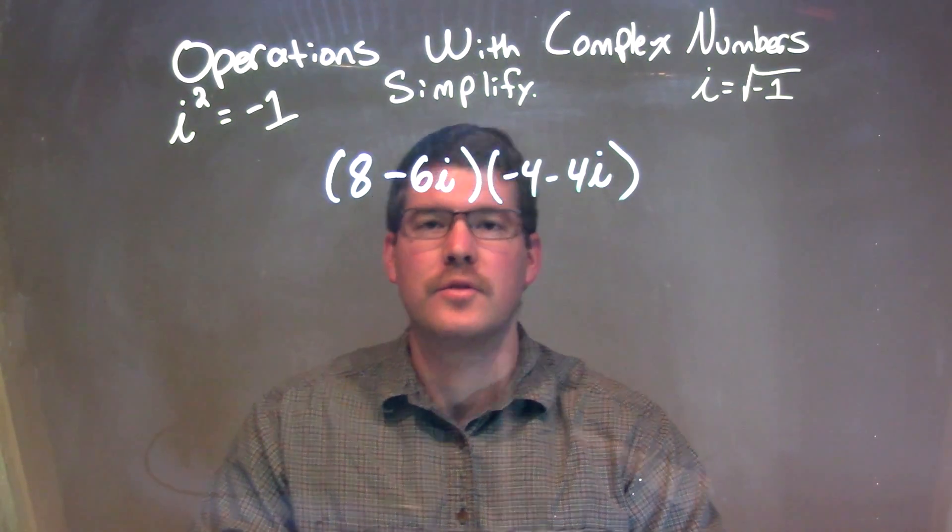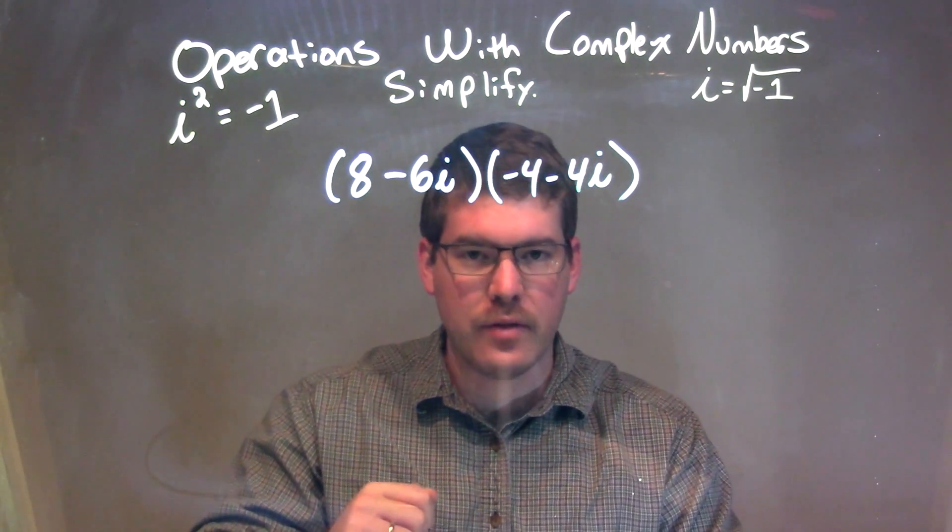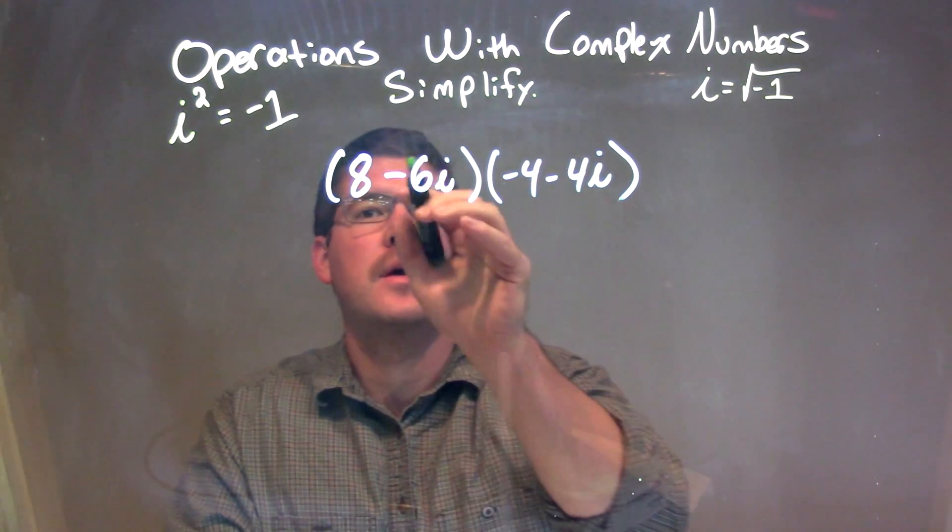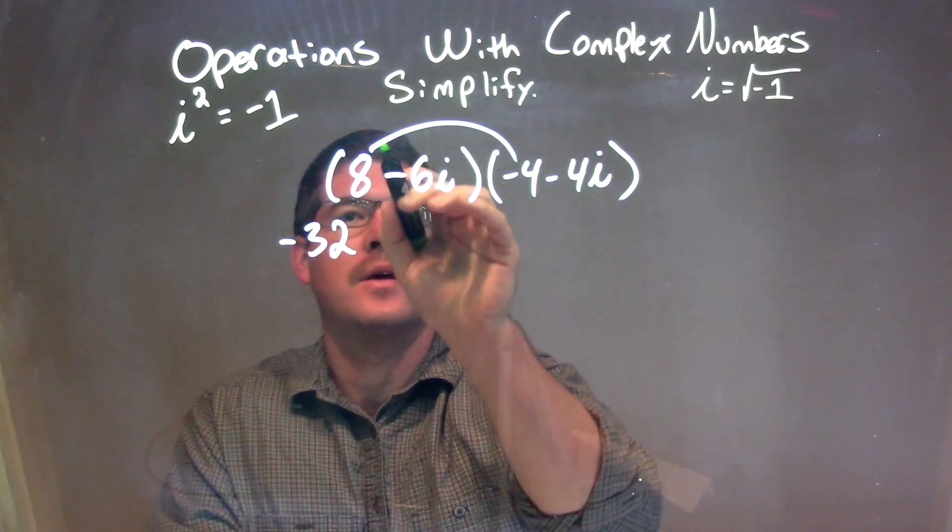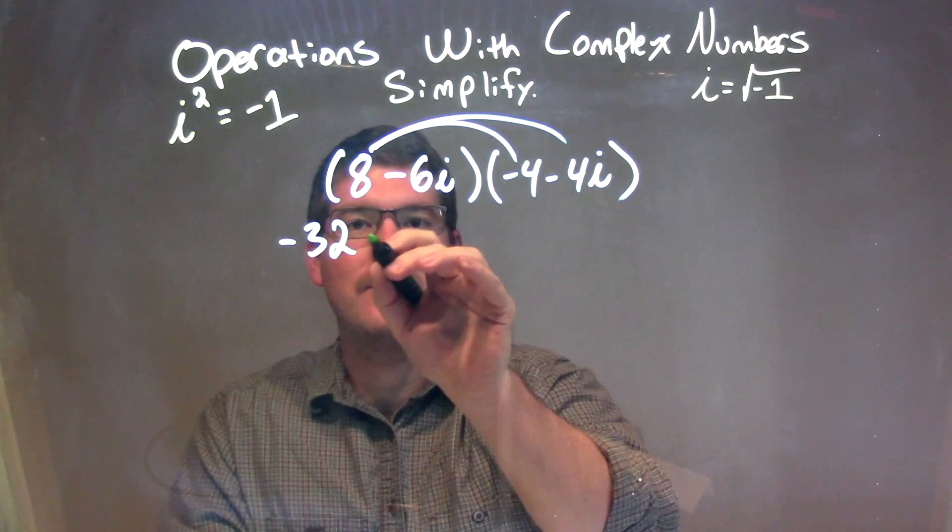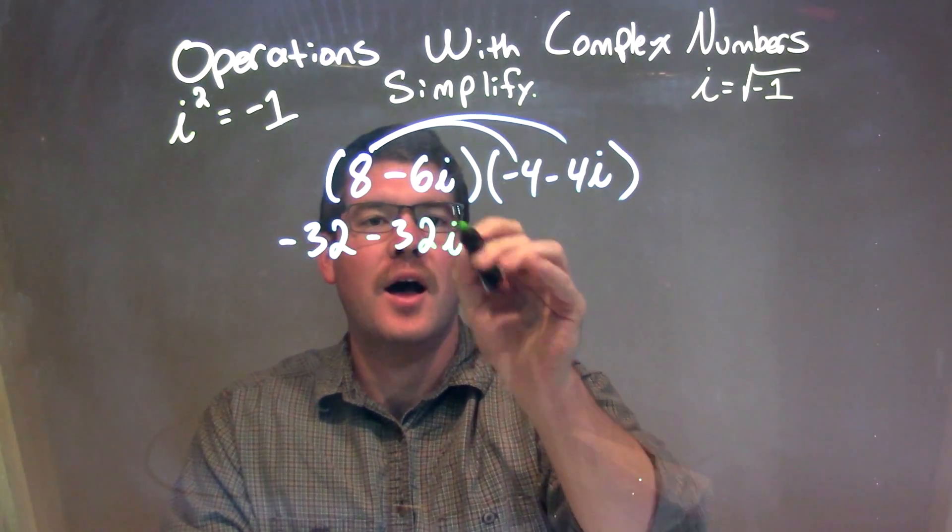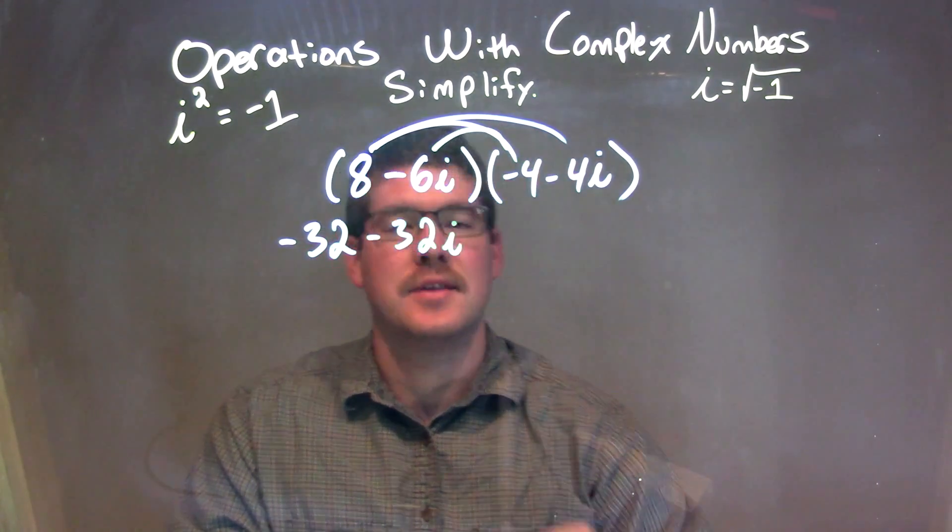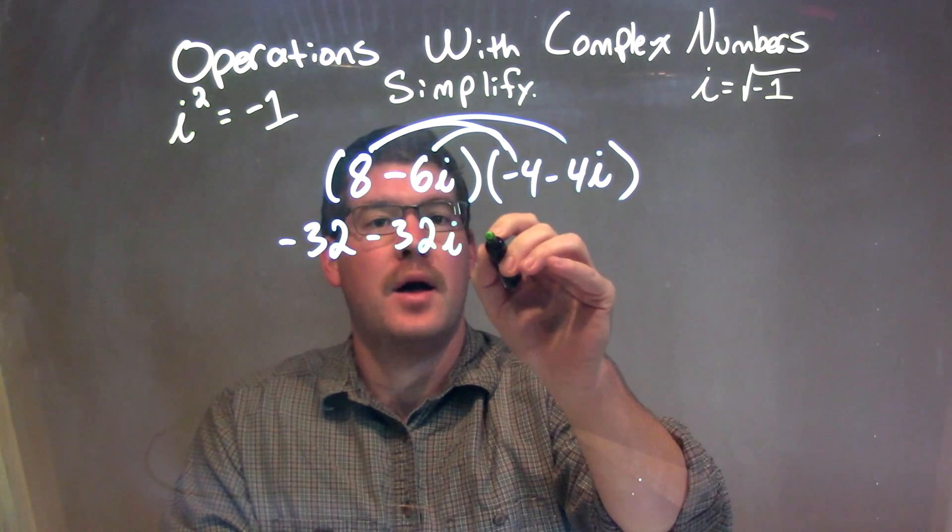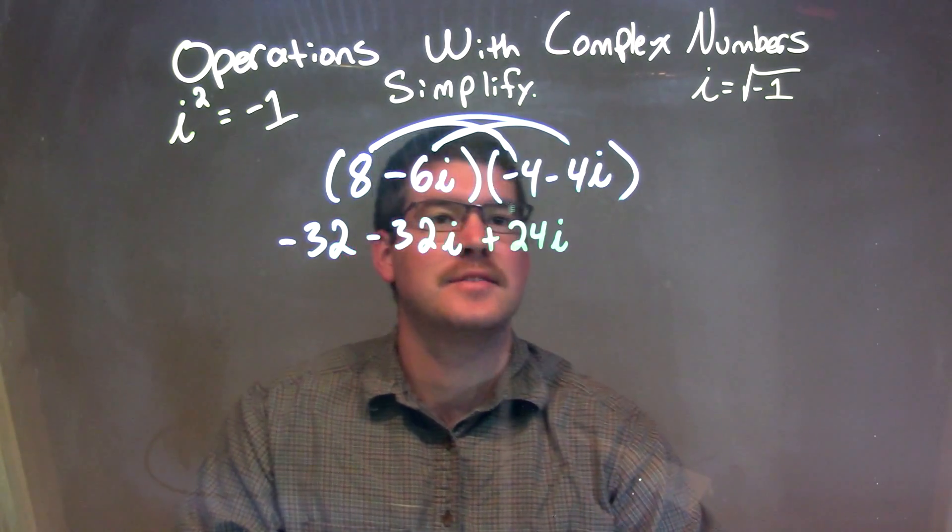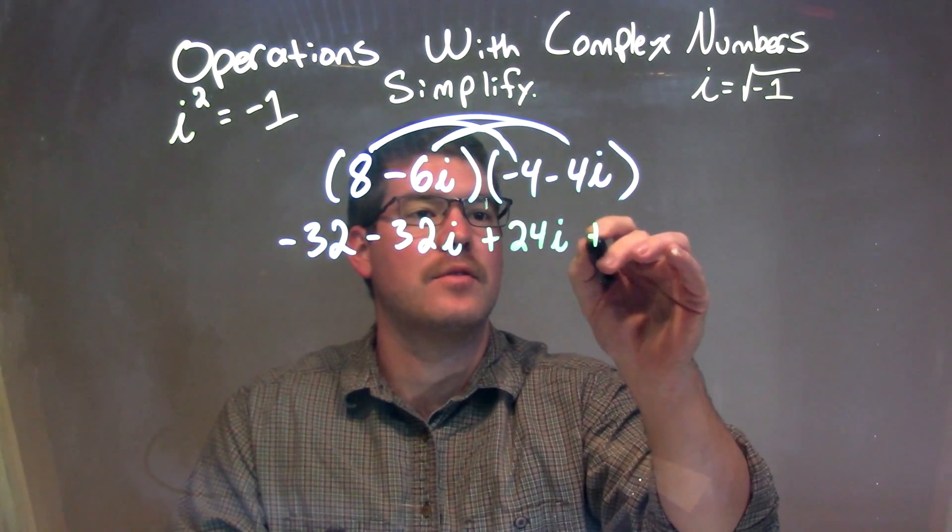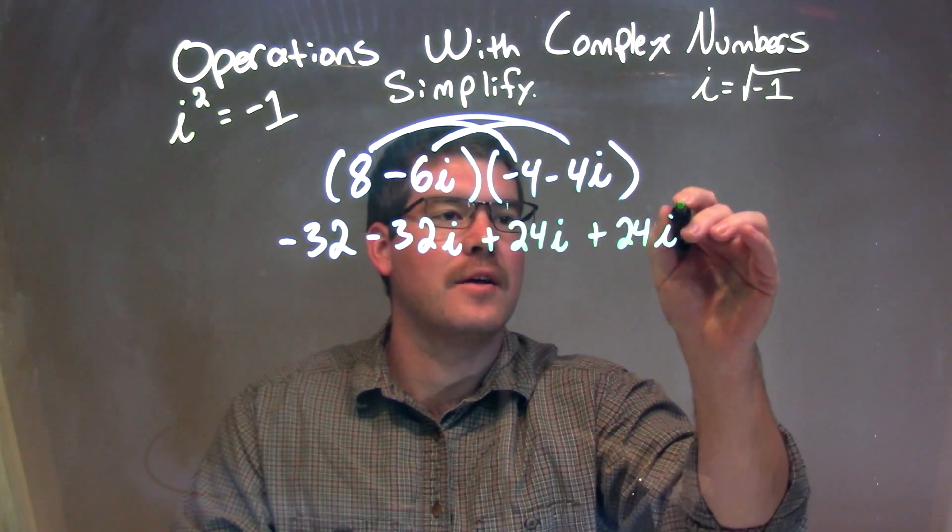What I want to do is multiply all parts of my first parenthesis by all parts of our second parenthesis. So 8 times negative 4 is negative 32, and 8 times negative 4i is negative 32i. Negative 6i times negative 4 is positive 24i, and negative 6i times negative 4i is positive 24i squared.